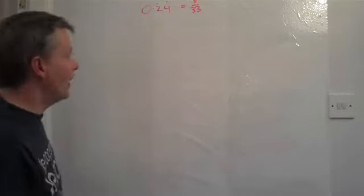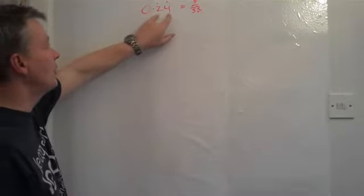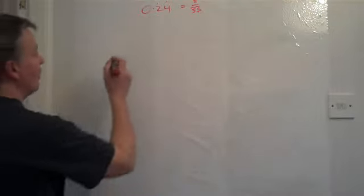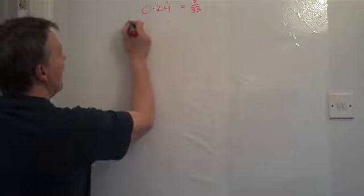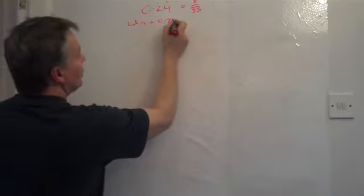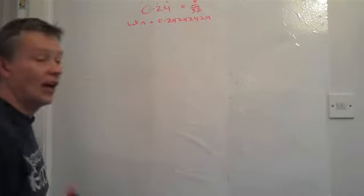Okay, and the way to do that is that we need to be in a position where we're going to get rid of this recurring part of the statement. So what I mean by that is I'm going to say let N equal 0.242424 and so on.